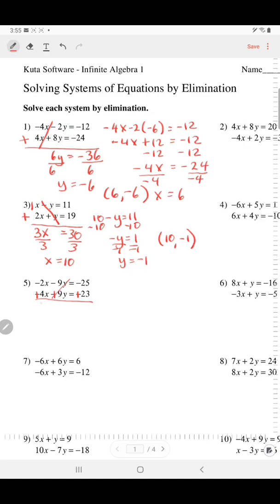Add negative 2 and positive 4. It's 2x equals negative 2. Divide. X equals negative 1. Plug it back into x of any equation. So negative 2 times negative 1 minus 9y equals negative 25. That's 2 minus 9y equals negative 25. Subtract 2. Negative 9y equals negative 27. Divide. Y equals positive 3. Present your answer, the x value first, and then the y.